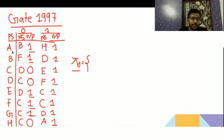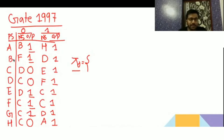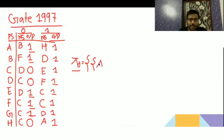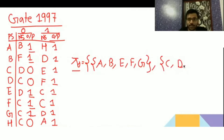So looking at all inputs: A, B, E, F, G on input 0 give output 1, so they stay together in one partition. C, D, and H stay together in another partition. So pi-0 = {A, B, E, F, G} and {C, D, H}. States giving the same output are grouped, and states with different output go into different partitions.